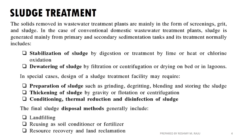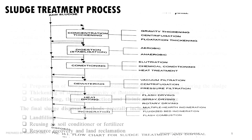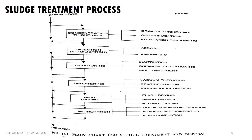You can use the dewatering of the sludge. In special cases, you can use the preparation of the sludge, thickening of the sludge, conditioning, thermal reduction and disinfection of the sludge. Finally, we dispose of the sludge mainly in three areas: fertilizer to convert to landfills, maximum resource recovery, and using different steps for sludge treatment including sedimentation tanks.